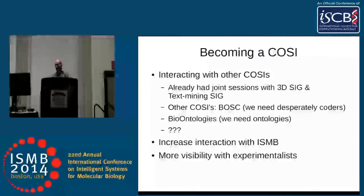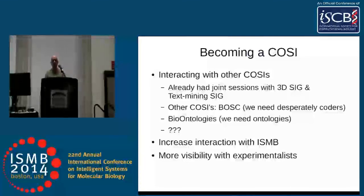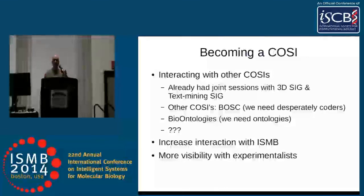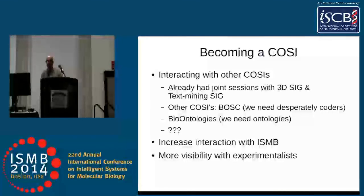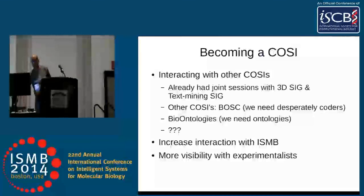We need to improve ontologies. One of the criticisms that came out from this year's AFP, and also last year, is that some of the ontologies we use need to be more descriptive. Gene ontology is great and the human phenotype ontology is great, but we need to do more. We need the ontologies because we need the machine-readable format, but we have the trade-off of machine-readability versus descriptiveness. We need to talk more with the bio-ontologies community as well. Increased interaction with ISCB and more visibility with experimentalists — these are the two things we need to do.